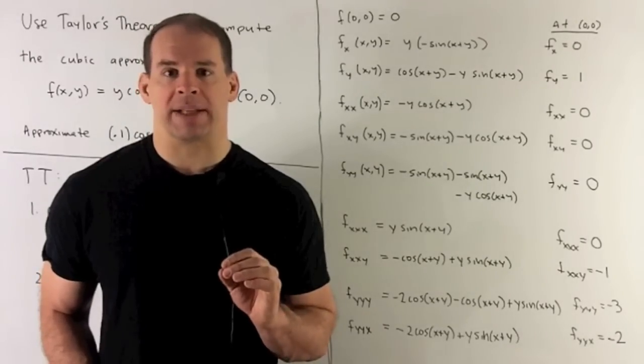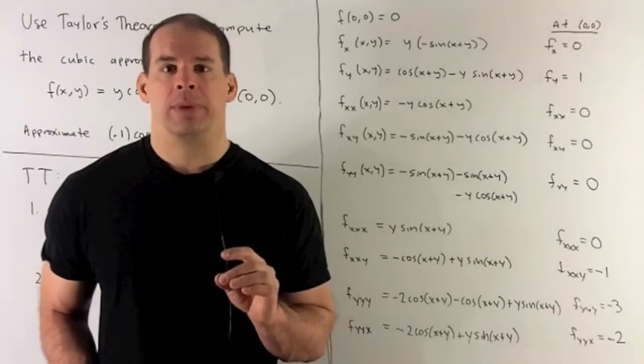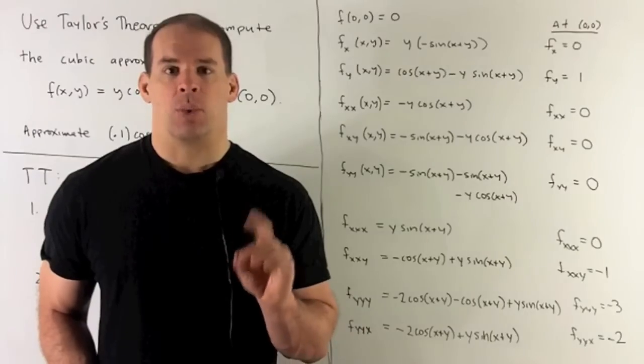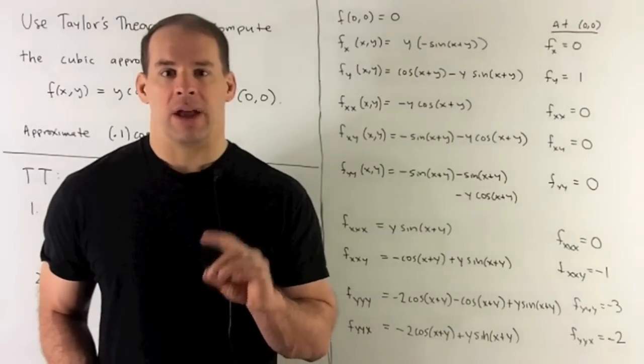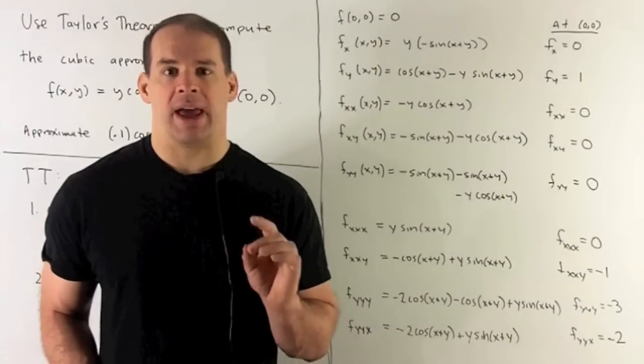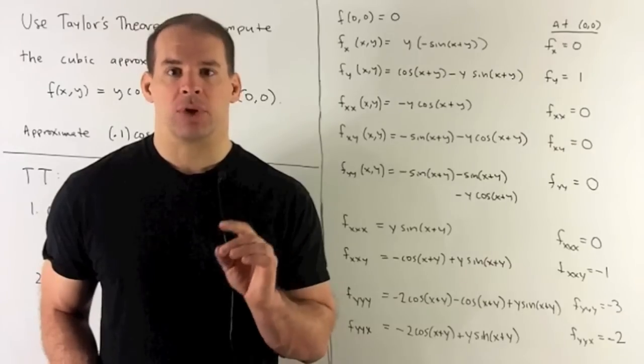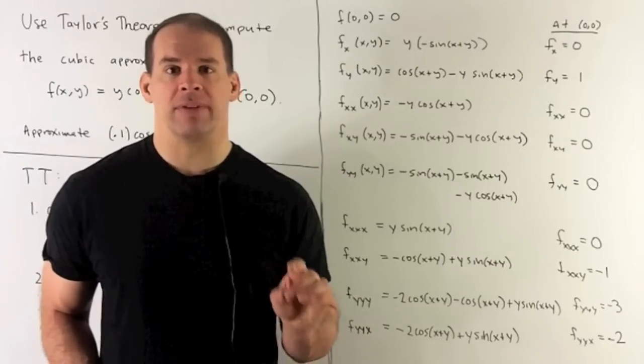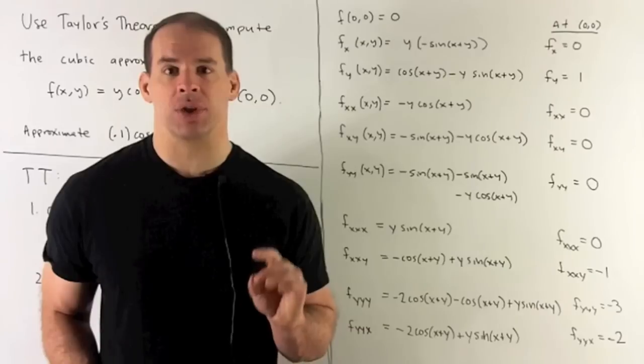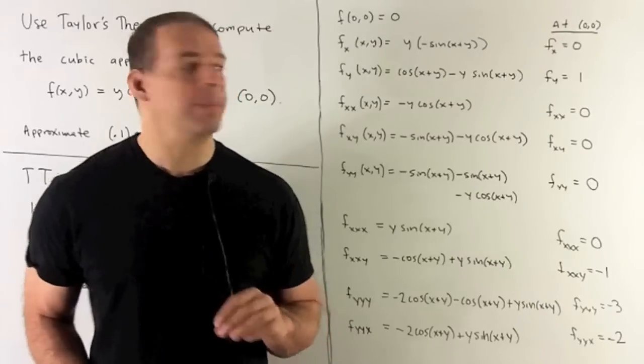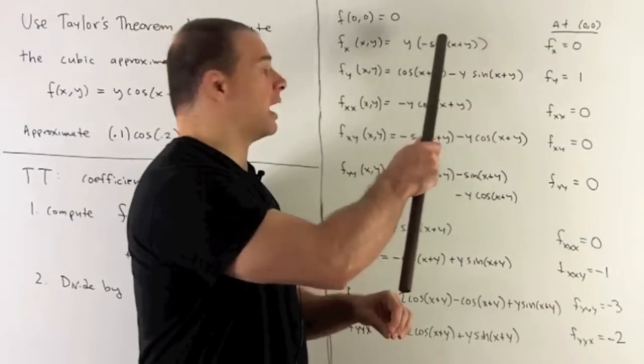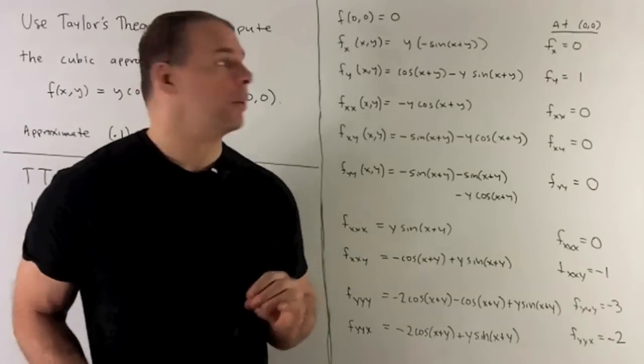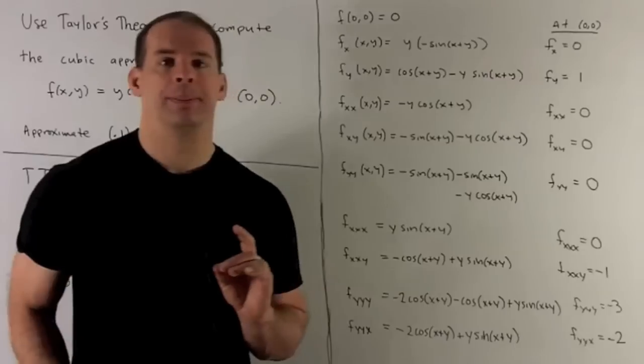Do a partial with respect to x. The variable's x, we treat y as a constant. So the y in front, I leave alone. Now it's just the chain rule on cos(x+y). Derivative of cosine is minus sine. Put the x+y back in. And then derivative of the inside with respect to x is going to be 1. So what comes out is going to be -y*sin(x+y). Put our point in, get a 0. So we're going to collect all these terms in a column.